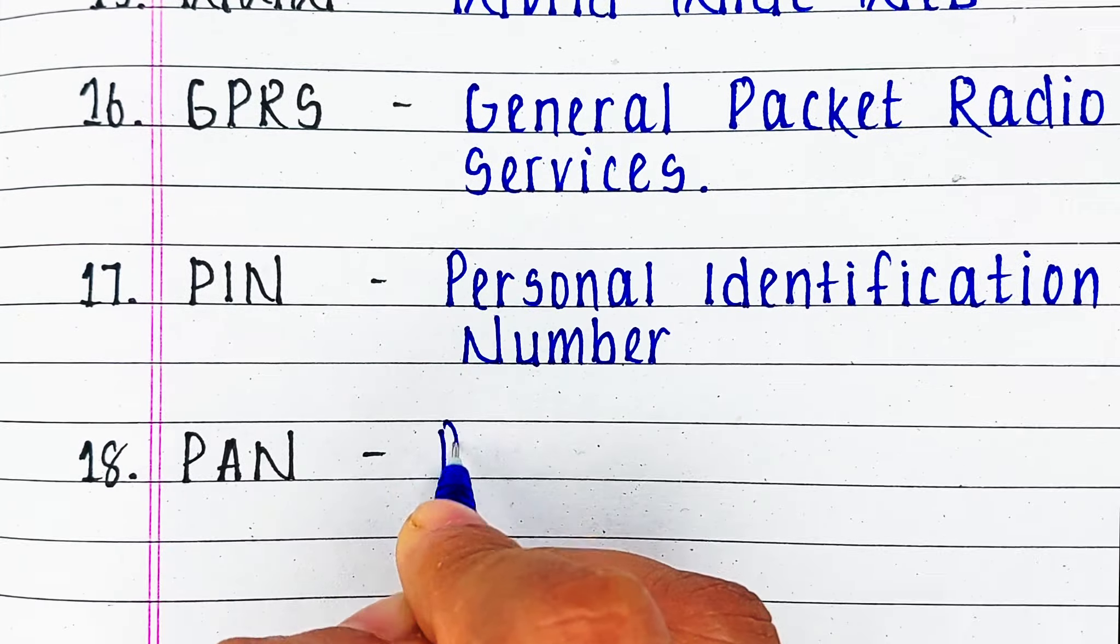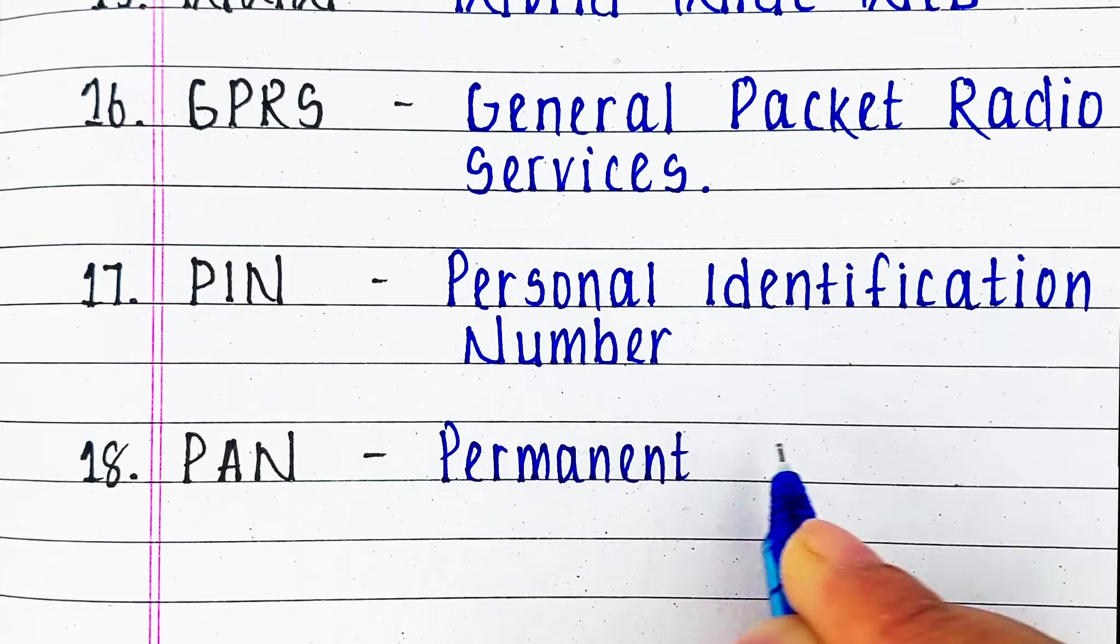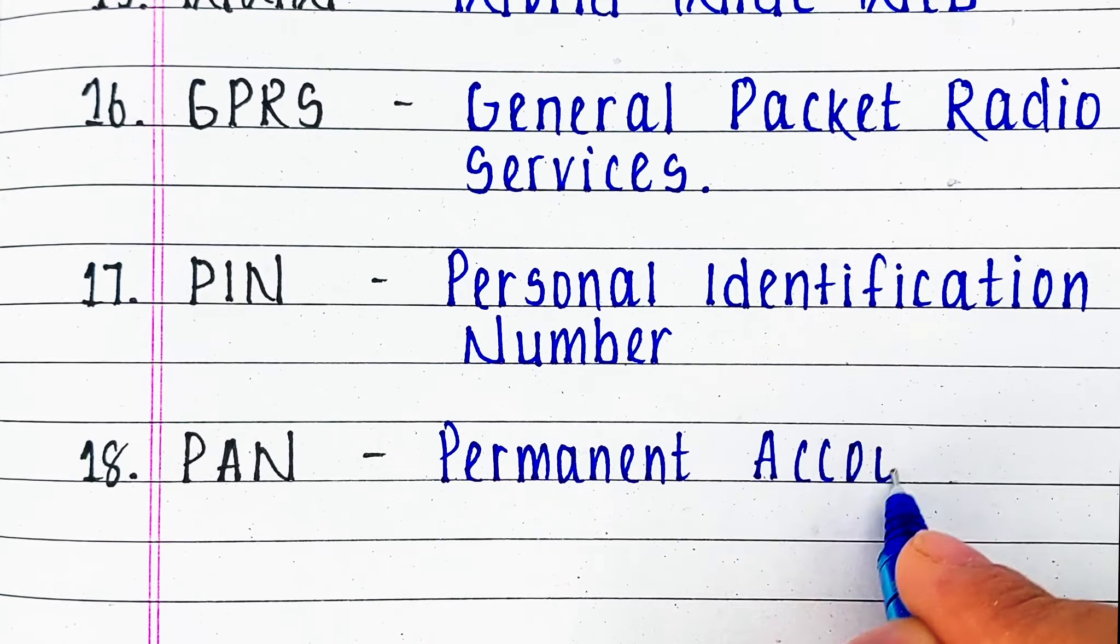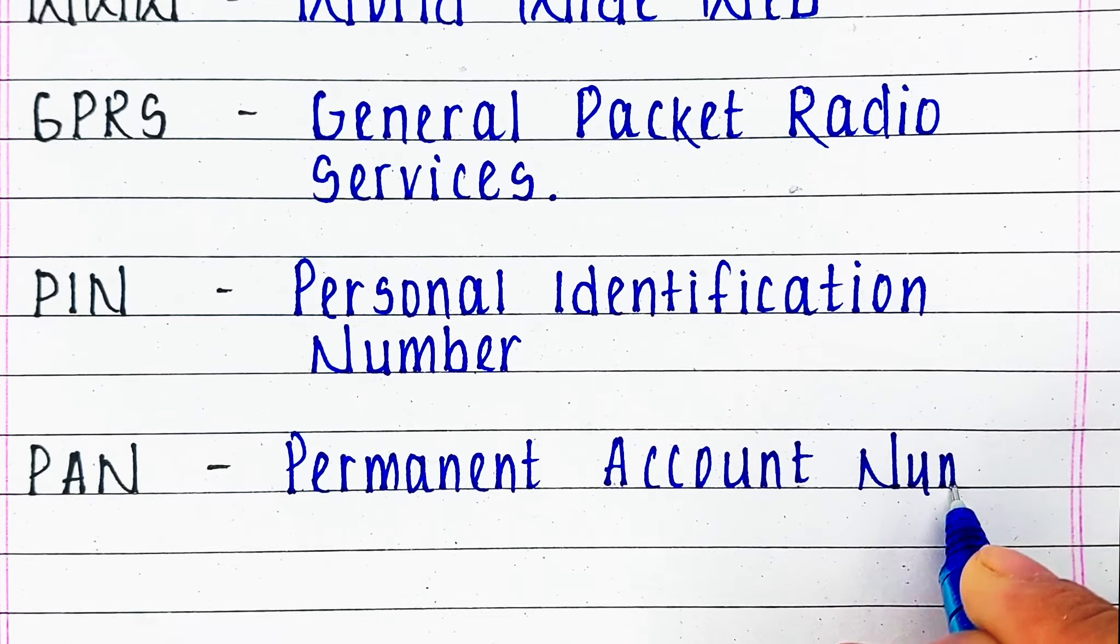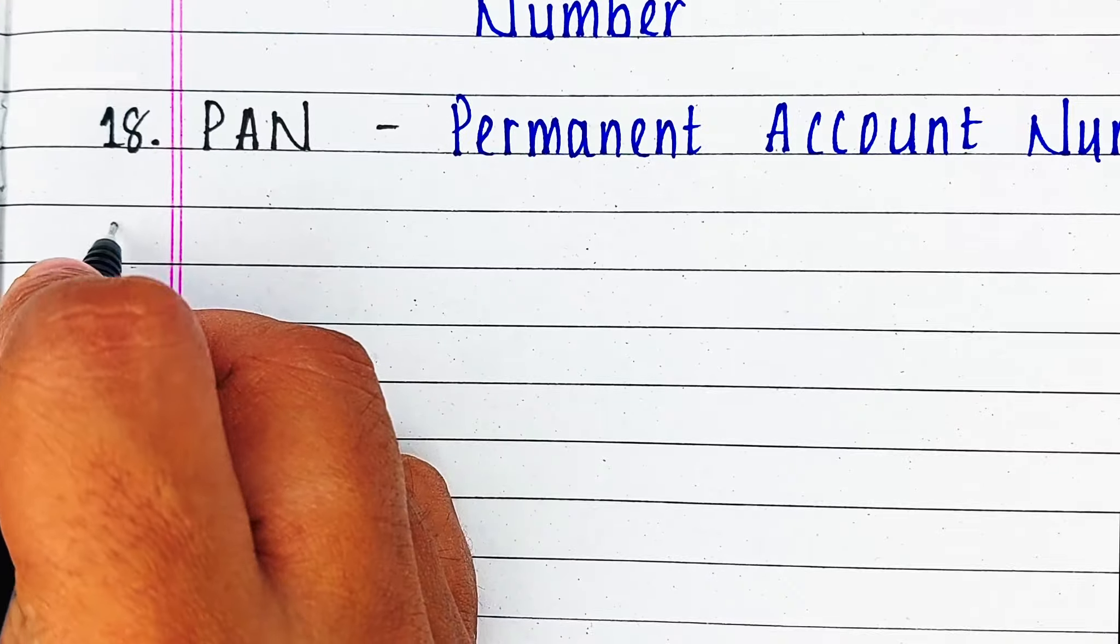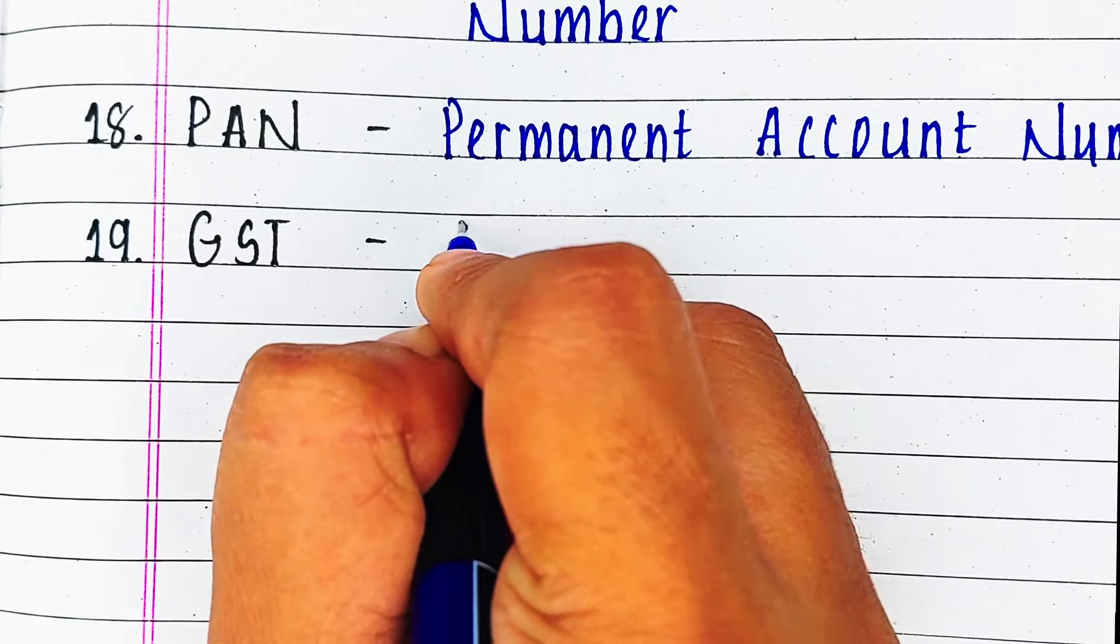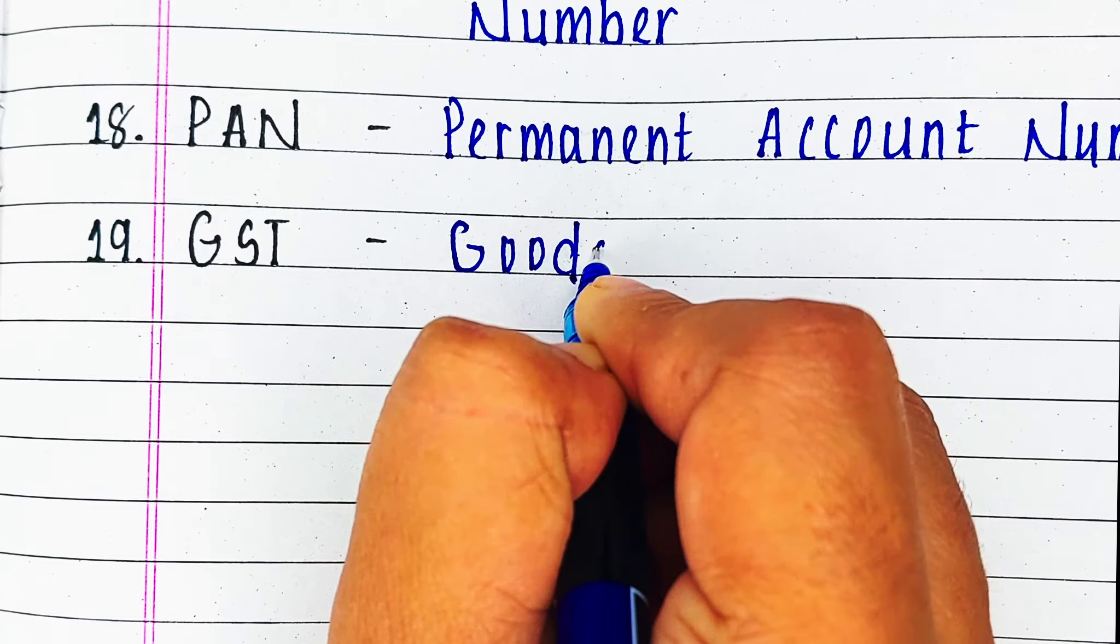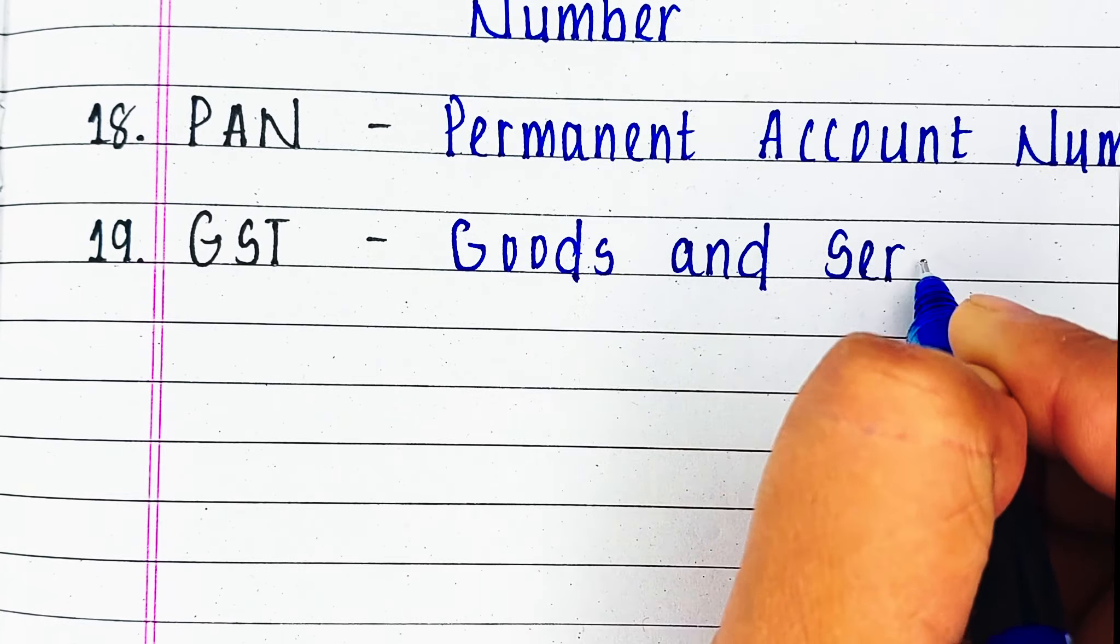PAN stands for Permanent Account Number. Next is GST, GST stands for Goods and Service Tax.